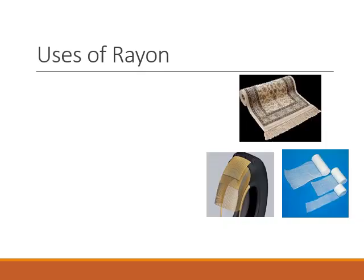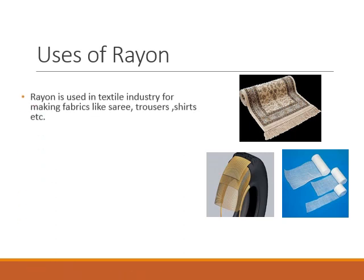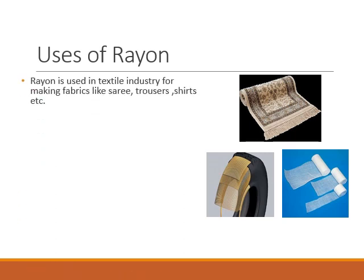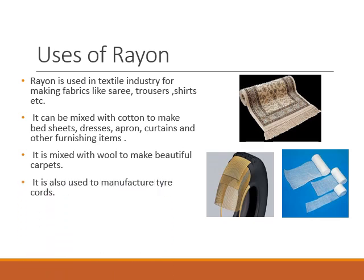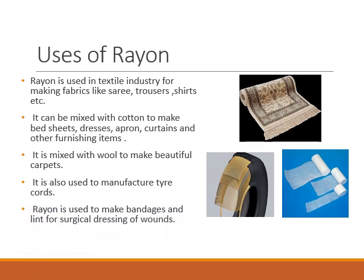Now let's see the uses of rayon. Rayon is used in the textile industry for making fabrics like sarees, trousers, shirts, etc. It can be mixed with cotton to make bed sheets, dresses, aprons, curtains, and other furnishing items. Rayon can also be mixed with wool to make beautiful carpets. It is used to make tire cords, and it is also used to make bandages and lint for surgical dressing of wounds.